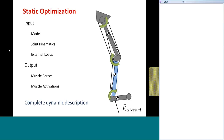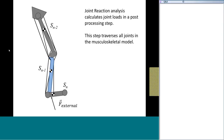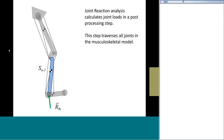The joint reaction analysis is essentially a post-processing method that traverses the model and calculates reaction forces and moments in all the joints. It starts with the most distal segment of each limb — in this case that's the foot. All external forces and muscle forces are used to calculate the resultant load at the proximal joint, which is the ankle. It then moves up the limb to the tibia segment and uses the equal and opposite ankle load on the tibia, and all other known forces, to calculate the reaction load at the proximal knee joint. This analysis continues up the limb, using the previously calculated reaction load at a distal joint to calculate the reaction load at the proximal joint.